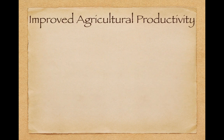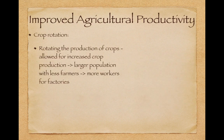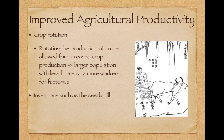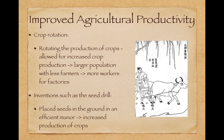Improved agricultural productivity was another factor. Crop rotation was used — rotating the production of crops — which allowed for increased crop production. More crops equals a larger population with fewer farmers, which equals more workers for factories. Inventions such as the seed drill, which placed seeds in the ground in an efficient manner, also increased crop production.